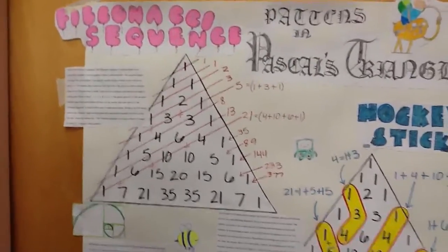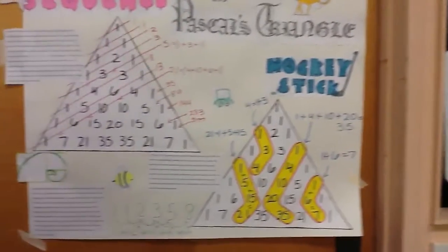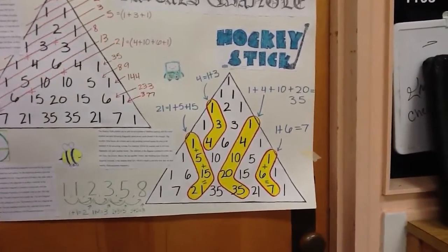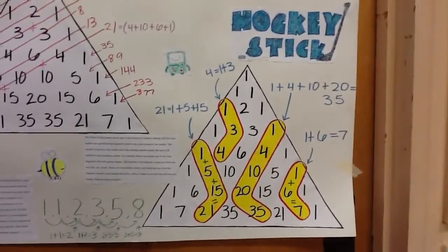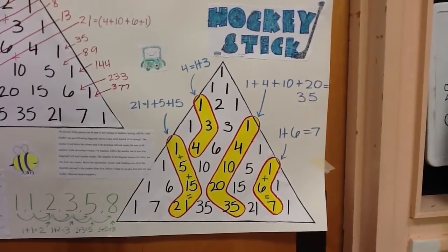My name is Joe and I'm doing my patterns on the Fibonacci sequence and the hockey stick pattern. So the hockey stick pattern can be seen in any column of numbers starting with the outer number 1 and following diagonally down to any point inward of the triangle. The number lying below the column and pointing outwards equals the sum of all the numbers in the column.